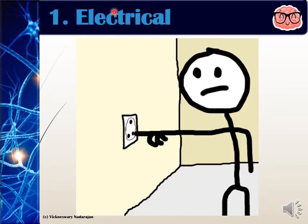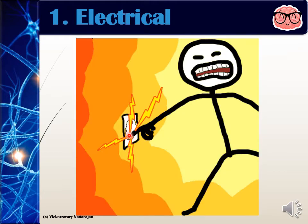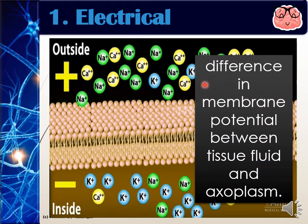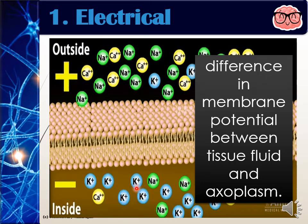The fact that impulse is electrical. Whenever we say electrical, what comes to mind is electricity. But electricity is physics. In biology, electrical is all about ions. So when we say an electrical impulse, it is actually referring to the difference in the membrane potential between the tissue fluid and the axoplasm. It is the difference in the amount of sodium ions and potassium ions that make the membrane either become negative or positive. That is the first characteristic.